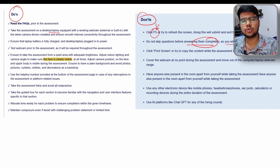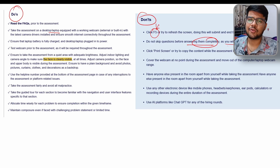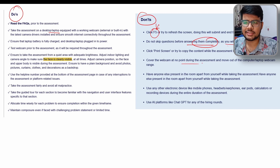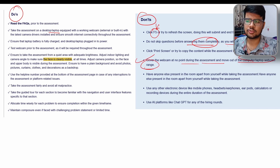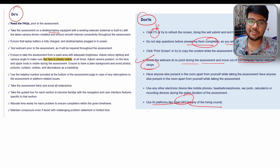Do not skip questions before answering them completely, as you won't be able to attempt them again. This is actually helpful of Cognizant — other companies often don't tell you whether you can go back to a previous question. Also, keep your face within the webcam range at all times during the assessment. Using ChatGPT at any hiring round is prohibited — don't do it.